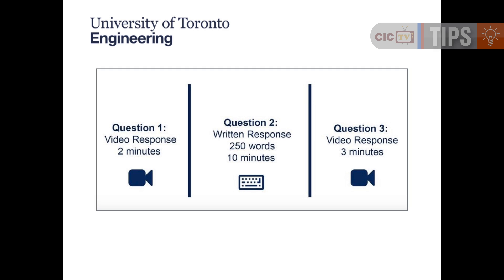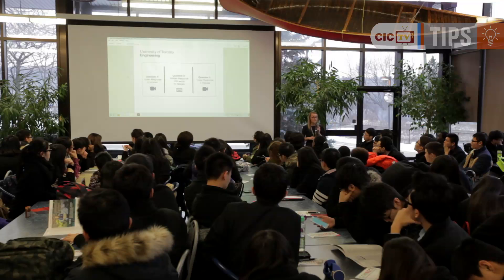The first question will pop up on screen and you'll have about two minutes to think about your answer, then two minutes to record your response. After that, it automatically moves to the next question. The second question is a written response — you'll have 10 minutes to write it, and pen and paper may come in handy here. The written response isn't specifically looking for proper grammar and spelling, but rather how you think analytically and critically — your thought process and communicational skills. The last question is again a video component, where you'll have three minutes to think about the question and three minutes to give a response.